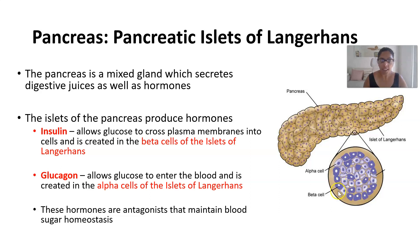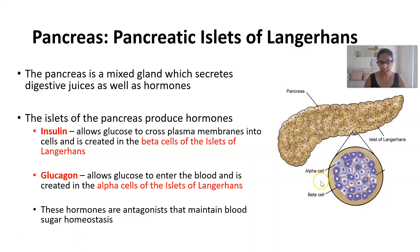Insulin will stimulate cells to take up glucose, thus removing it from the bloodstream. The other type of cells found in the islets of Langerhans are alpha cells. Alpha cells are antagonistic to beta cells — that is to say they produce hormones that have the opposite effect. So alpha cells will secrete a hormone known as glucagon, and this will stimulate glucose to re-enter the bloodstream and raise blood glucose concentration.